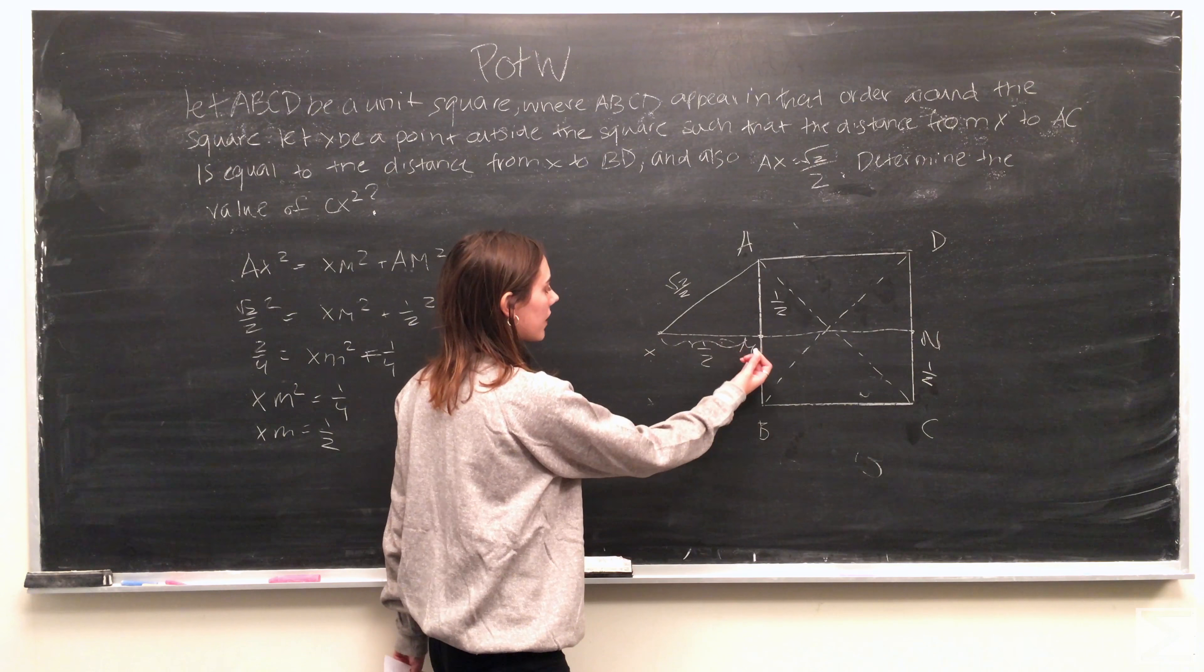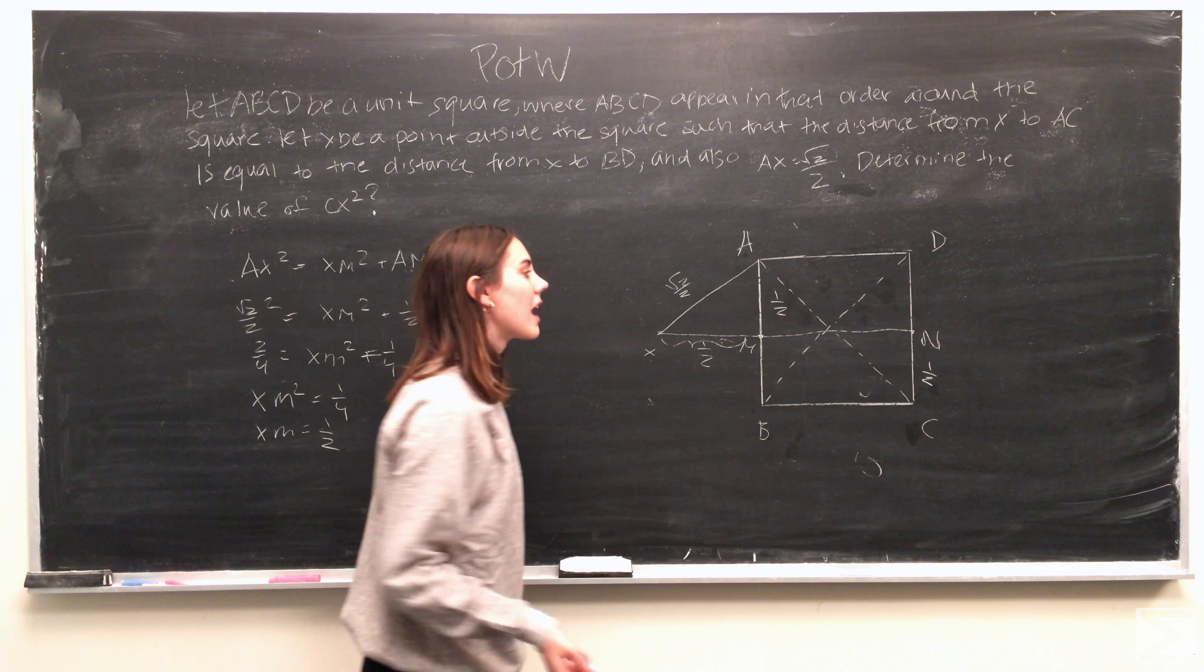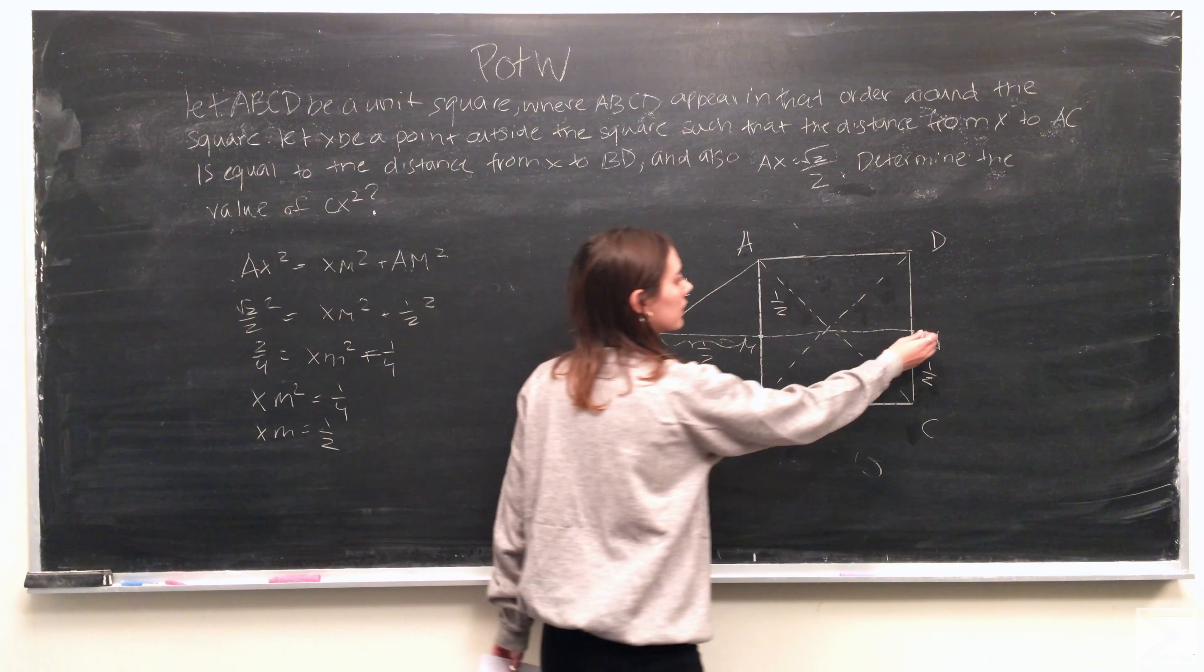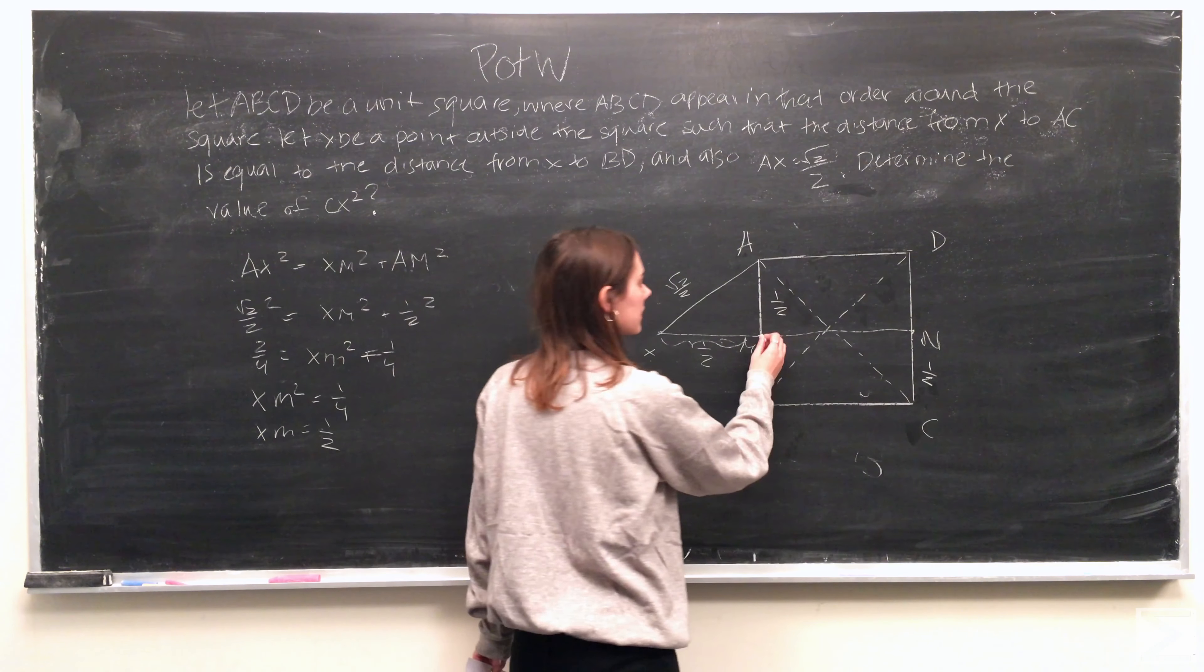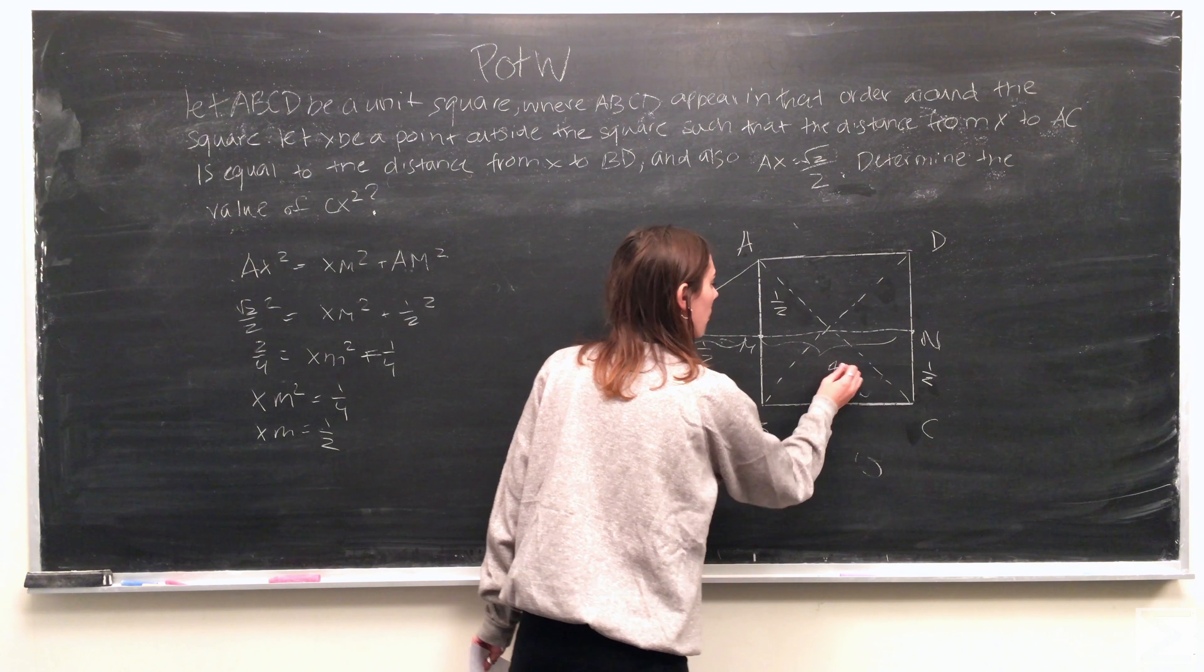So now that we know that this distance xm is equal to 1 half, what we then know is that the distance xn is equal to 3 over 2, since this is a unit square and this distance is equal to 1.